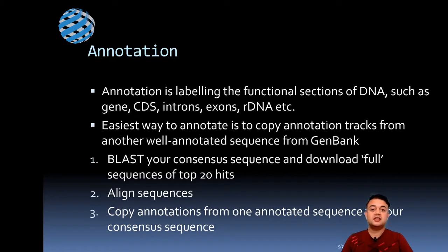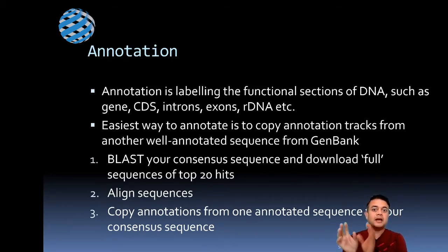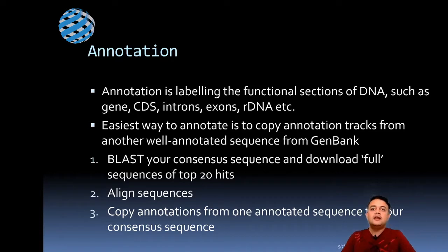We will see what annotation is and how to annotate your genome — all this before summarizing GenBank submission. Annotation is nothing but labeling certain regions of your sequenced gene as functional: what a gene codes for, whether a region is an intron or exon, or a transcription factor binding site, or a primer binding site. Labeling these different sections of your sequenced gene is nothing but annotation. The easiest way to annotate is to copy annotation tracks from another well-annotated homologous sequence from GenBank.